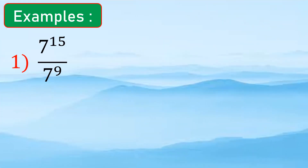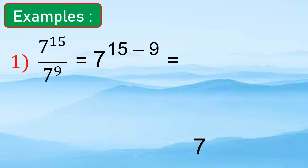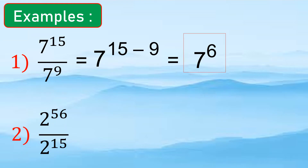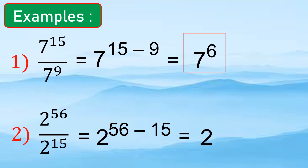Examples: we have 7 to the 15th over 7 to the 9th. We copy 7, then subtract 15 minus 9, giving us 7 to the 6th. For 2 to the 56th over 2 to the 15th, we copy 2, then compute 56 minus 15, which equals 41, so the answer is 2 to the 41st.